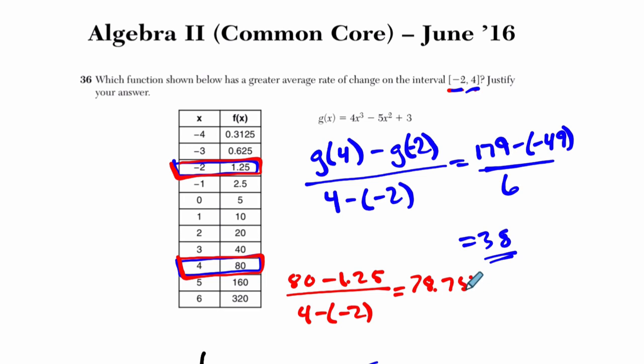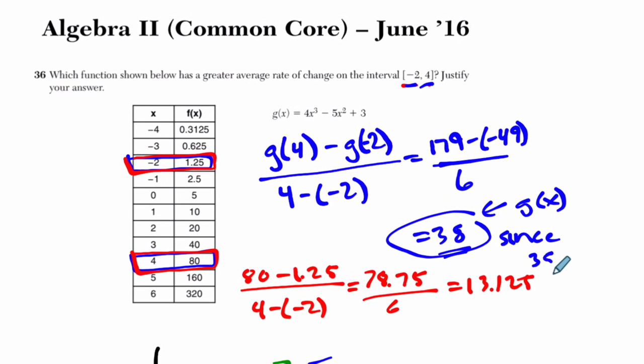This is just over here, that's 78.75 over 6, which is 13.125. Well, this is larger. g of x, and then be brief, say, since 38 is greater than 13.125, that's it.